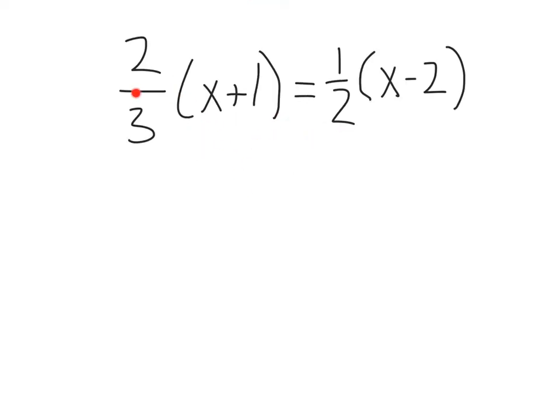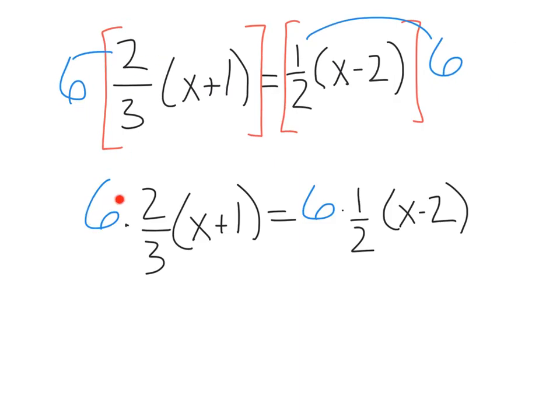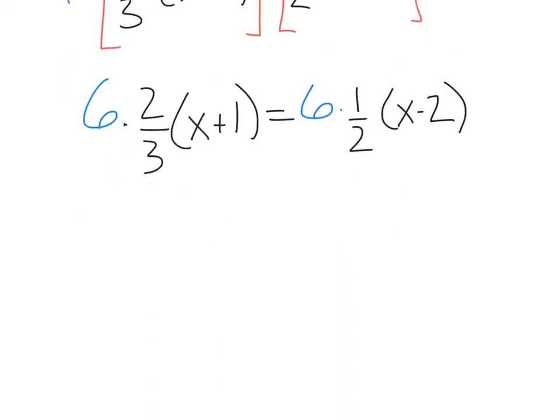Alright, last one, just in case you come across something where you have a fraction multiplying across a group. Now feel free to distribute this out and then clear your fractions. But, if you want to save even more time, you can treat each of these like a separate term. Whenever you're multiplying, it only counts as one term. So, we can proceed like normal. I'm going to multiply each side of the equation by 6, which is my common denominator or my least common multiple of 3 and 2. That's going to give me 6 times (2/3)(x+1). This 6 does not distribute into both the fraction and the parentheses. It just needs to multiply out front. Equals 6 times (1/2)(x-2). My 6 and 3 are going to cancel out, leaving me with a 2 on top. My 6 and 2 over here cancel, leaving me with a 3.